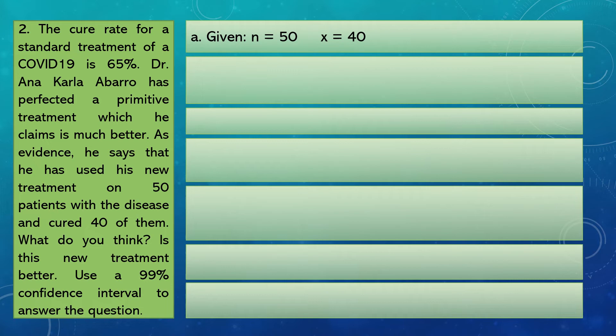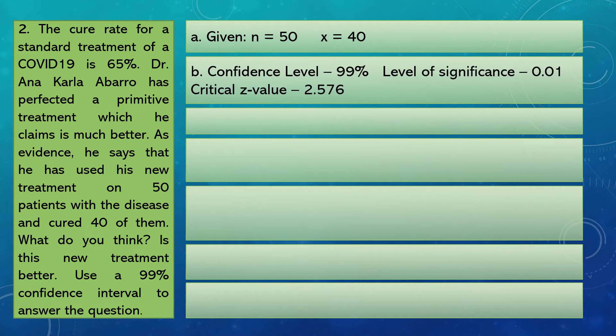The confidence level is 99%. To find the level of significance: 100% minus 99% is 1%, so the level of significance is 0.01 as a decimal. For the critical Z value, looking at our T distribution table, Z is equal to 2.576.